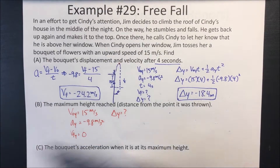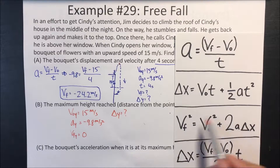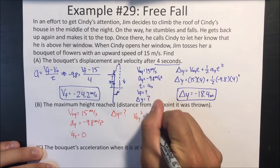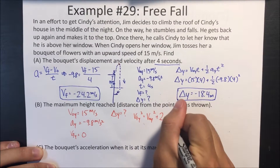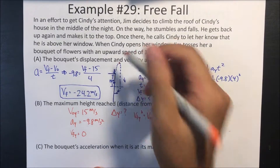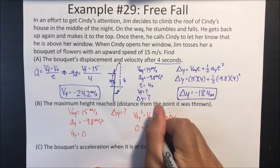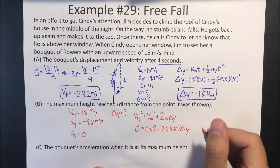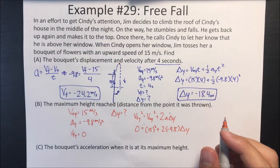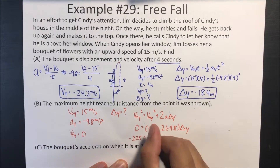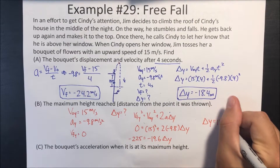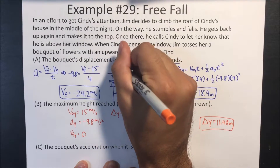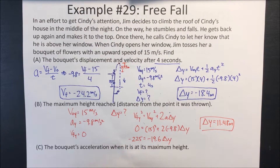We're going to use the formula V_fY squared equals V initial Y squared plus 2A times change in Y. We know at the top it's zero, so: 0 equals 15 squared plus 2 times negative 9.8 times change in Y. Doing the math, from where it was thrown, it goes up 11.48 meters until it starts to go back down.